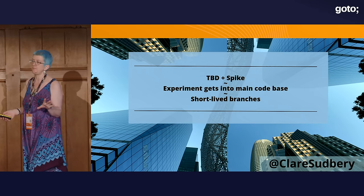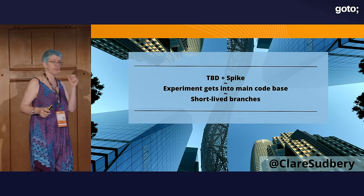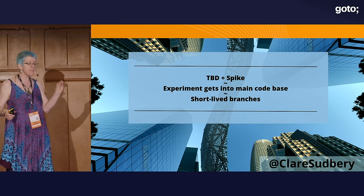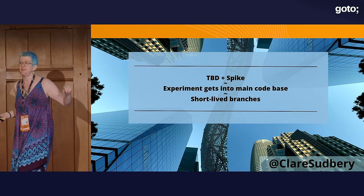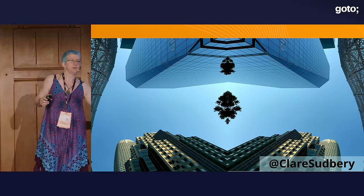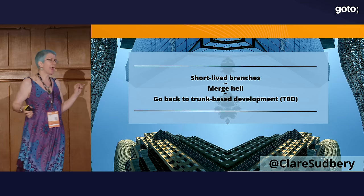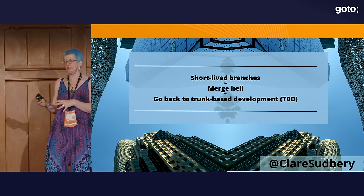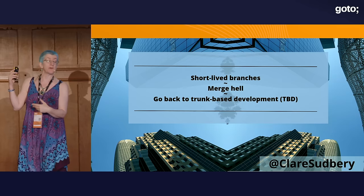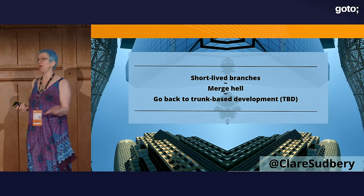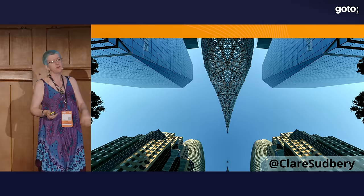But then one of them wants to do a spike — experiment with a new idea. Since the new edict is everything goes to main, their experimental, poorly-tested code goes into the main code base and everything blows up. So they decide spikes are an exception: do spikes in short-lived branches. But the more they use short-lived branches, every time one needs merging back — merge hell. So they go back to trunk-based development: no branches allowed, everything going to main.